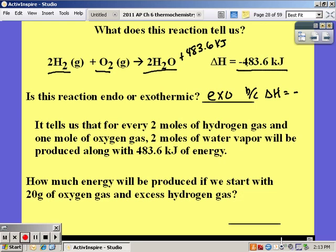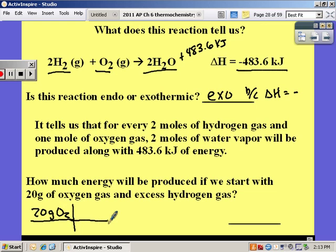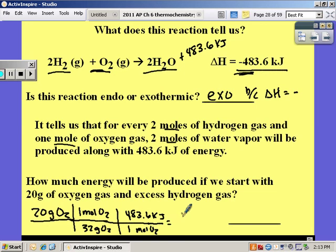Based on that stoichiometry information, we can convert between grams and energy. So we're starting with 20 grams of oxygen. And for all stoichiometry, you have to convert it to moles. And 1 mole of oxygen gas weighs 32 grams. Then looking at the balanced equation, 1 mole of oxygen is going to produce 483.6 kilojoules. And it told us that it's going to be produced, so we don't need the negative sign. Multiplying and dividing, you get 302 kilojoules.